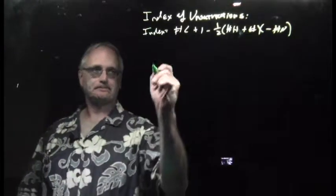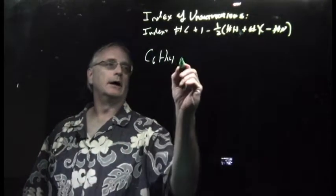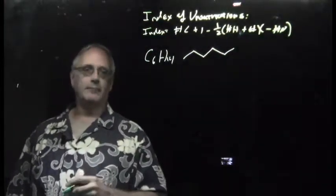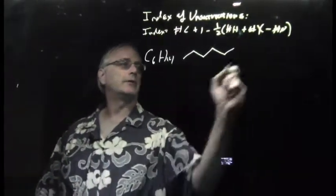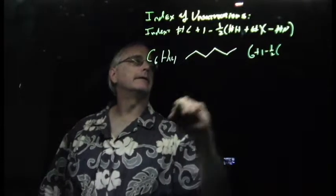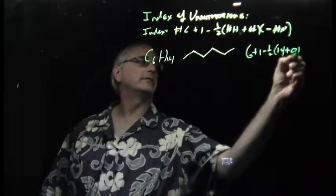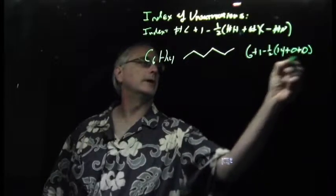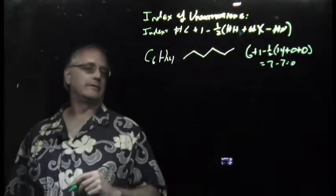For example, C6H14, this would be the formula of hexane: one, two, three, four, five, six, a linear structure with no pi bonds, no rings. It should have zero unsaturations in it. And if you apply the formula here, number of carbons is six, plus one, minus half the number of hydrogens which is 14, plus the number of halogens minus the number of nitrogens, zero. Seven minus half of 14 is seven, equals zero. Index of unsaturations, zero.